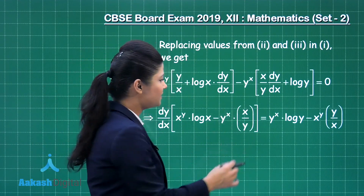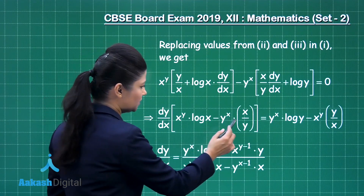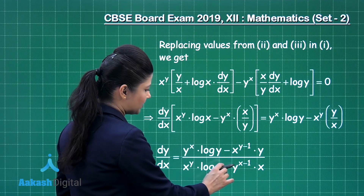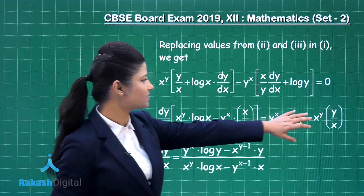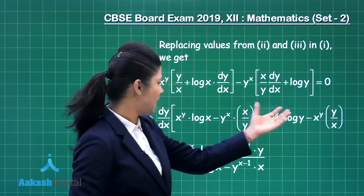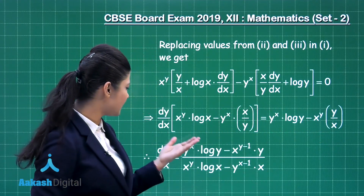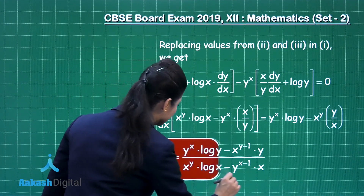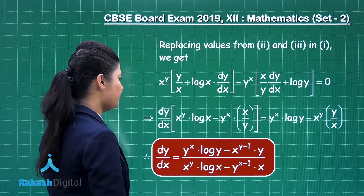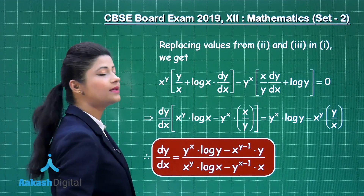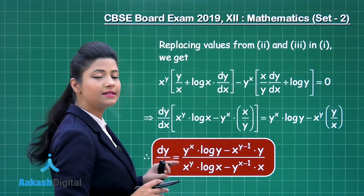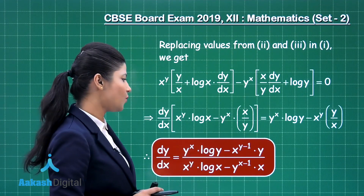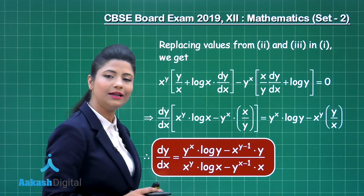Simplifying these terms results in x raised to the power y minus 1 times y on one side, and y raised to the power x minus 1 times x on the other. Transposing the bracket to the right-hand side gives the value of dy/dx equal to y raised to the power x times log y minus x raised to the power y minus 1 times y, divided by x raised to the power y log x minus y raised to the power x minus 1 times x.